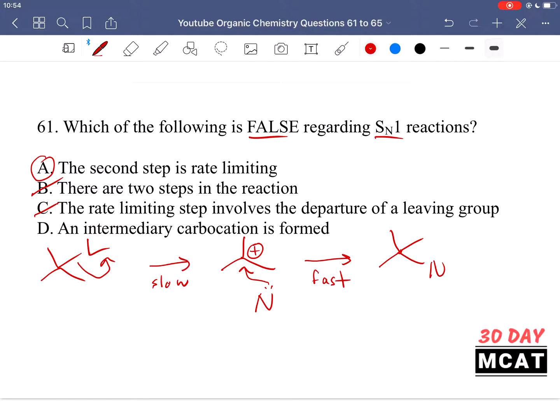Option C says the rate limiting step involves the departure of a leaving group. This is correct because this is that first step with departure of the leaving group, the slow step forming the carbocation. Option D says an intermediary carbocation is formed. Yes this is a key part of the SN1 reaction. The only false one is option A.